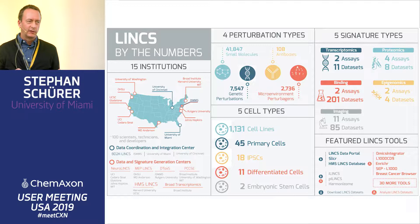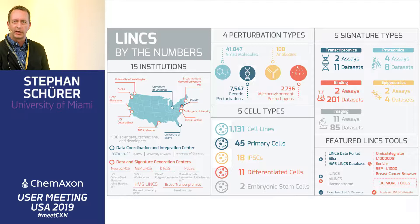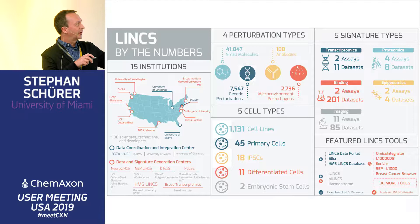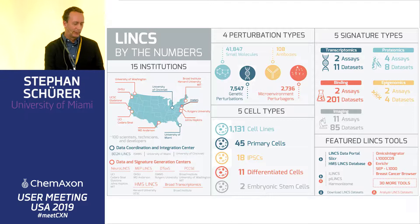What it does is generate a number of different data types in cells. The idea is that you perturb cells with different types of perturbations — genetic perturbations, small molecule perturbations, microenvironmental perturbations — using various cell types: cell lines, stable cell lines, but also primary cells, iPSCs, and so on. And then you read that out in many different spaces, for example transcriptional space, proteomics, epigenomics, binding, imaging, cell phenotypes, and so on. This project also generates lots of tools.